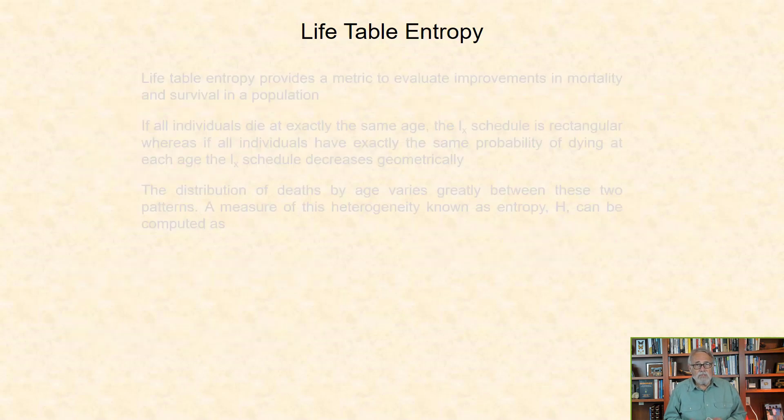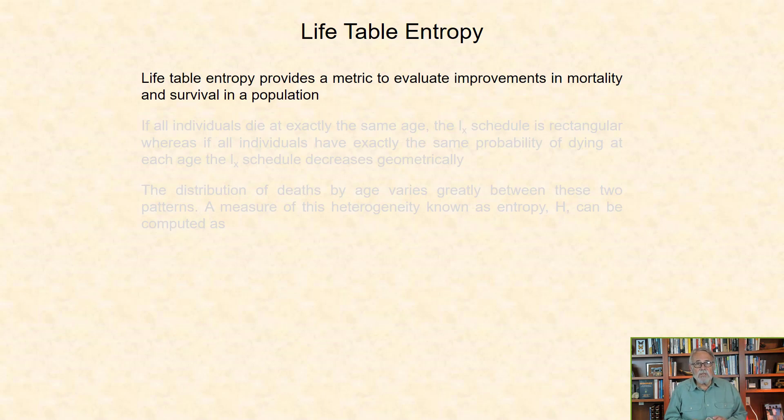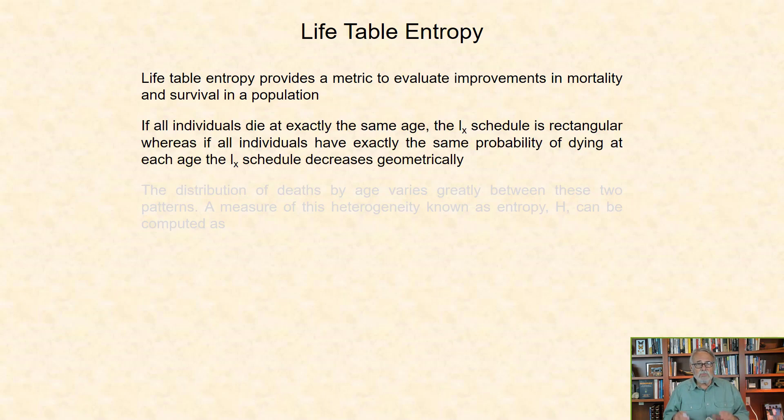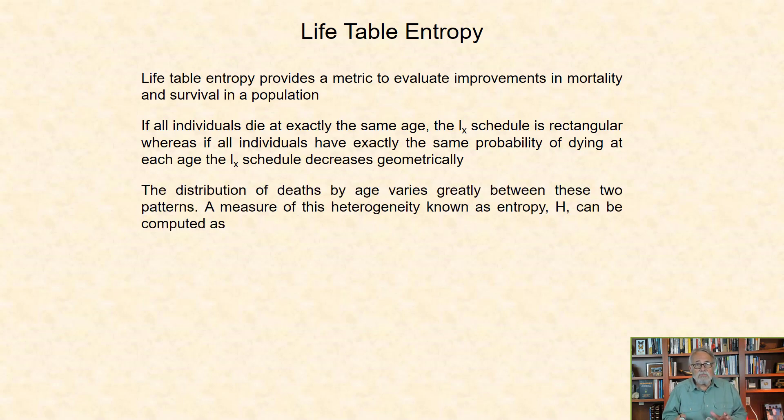The third model is life table entropy. This provides a metric to evaluate improvements in mortality and survival in a population. If all individuals die at exactly the same age, the LX schedule is rectangular. Whereas if all individuals have exactly the same probability of dying at each age, the LX schedule decreases geometrically. So the distribution of deaths by age varies greatly between these two patterns.